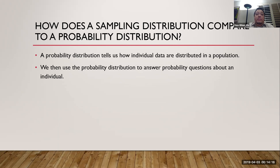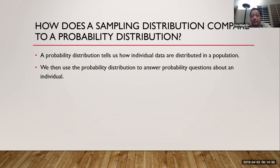For example, we may be told that the amount of medication in bottles are normally distributed. So we use that normal distribution to answer probability questions about an individual in that population. For medication bottles, it would be a question like: what's the probability that a bottle has more than 25 cc of medication in it?